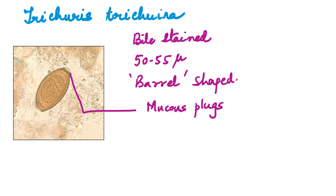Next is Trichuris trichiura. Now we've moved on to the large intestinal nematodes. The egg is very typical — it is barrel-shaped. In microbiology, remember two barrels: one is the barrel-shaped egg of Trichuris, and the other is the barrel-shaped arthrospores of Coccidioides immitis and Posadasi. So barrel-shaped eggs with an unsegmented ovum — the larva has not yet developed — and you can see the bipolar mucus plugs. 50 to 55 microns, barrel-shaped eggs with bipolar mucus plugs: very typical of Trichuris.